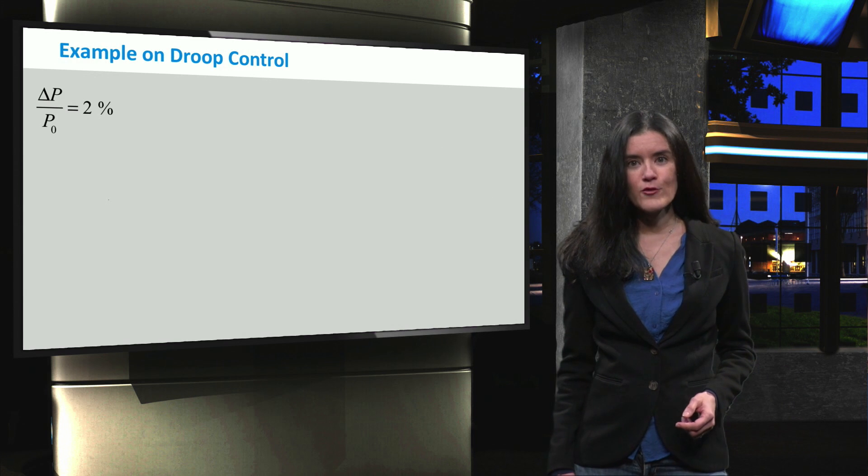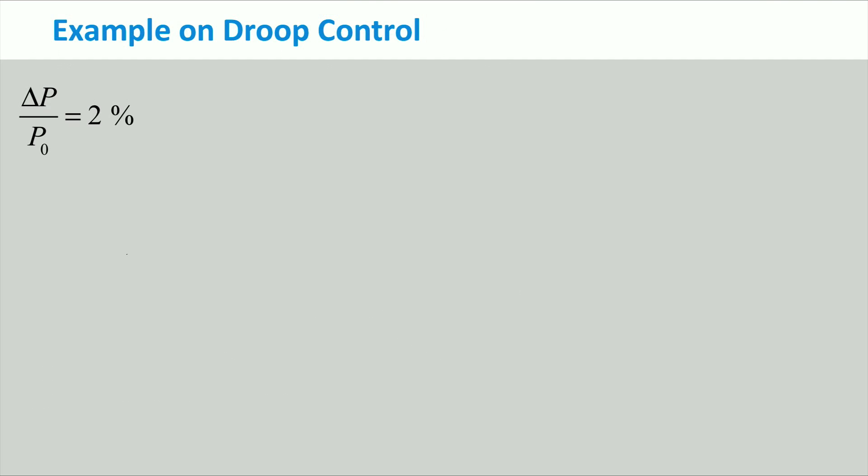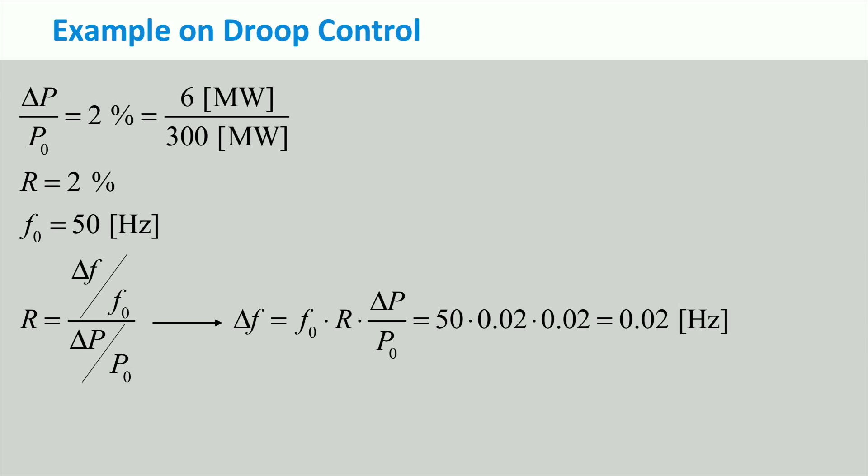Let's have a look at a numerical example. Consider that due to a change in the load, a system suddenly needs to supply an additional 2% from its rated load of 300 MW, meaning 6 MW. The droop coefficient is 2%. If the frequency was at a rated 50 Hz, what would be the new system frequency? Rearranging the droop equation and substituting with the values, we can see that the new system frequency is 49.98 Hz.